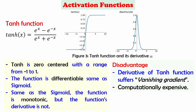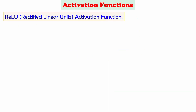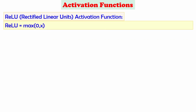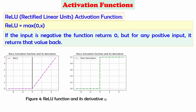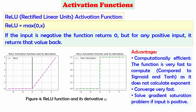The third activation function is the Rectified Linear Unit, or ReLU. The ReLU function is given by max(0, x) — if the input is negative it returns 0, and for any positive input it returns the value back. The figure shows the ReLU activation function and its derivative. The advantage of ReLU is that it is computationally efficient, very fast to compute compared to sigmoid and tanh, as it does not involve any exponent calculation. It converges very fast and also solves the gradient saturation problem for positive inputs.